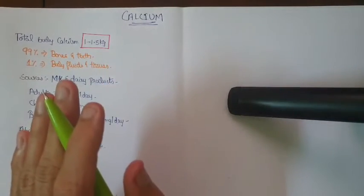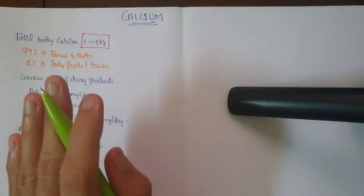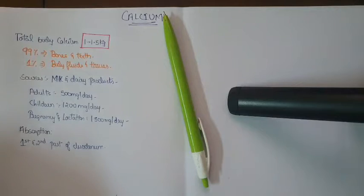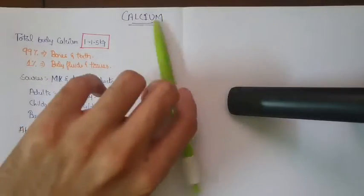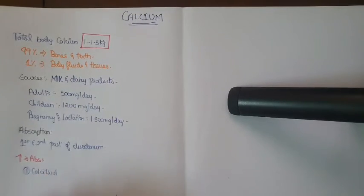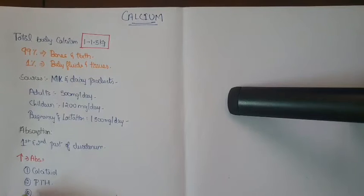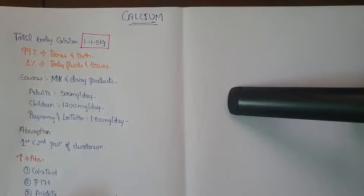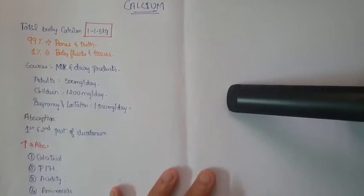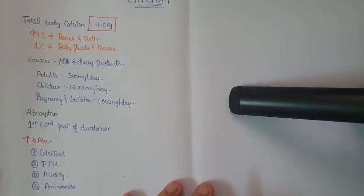What are the factors which increase the absorption? First, calcitriol. Next, PTH — that is parathyroid hormone. Third point, acidity. And the fourth point is the amino acids, mainly lysine and arginine.